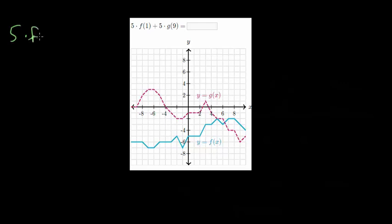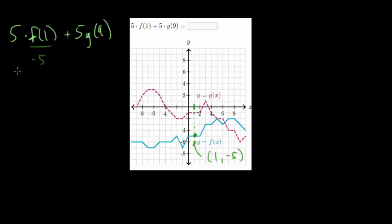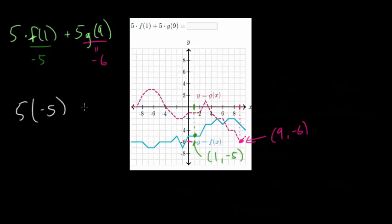Let's do another one. We have 5 times f of 1 plus 5 times g of 9. For f of 1, going to the blue curve at x equals 1, it looks like the point is 1 for x and minus 5 for y, so f of 1 is minus 5. For g of 9, finding x equals 9 on the curve, the y value looks to be minus 6, so that point is 9 comma minus 6 and we replace g of 9 with negative 6.